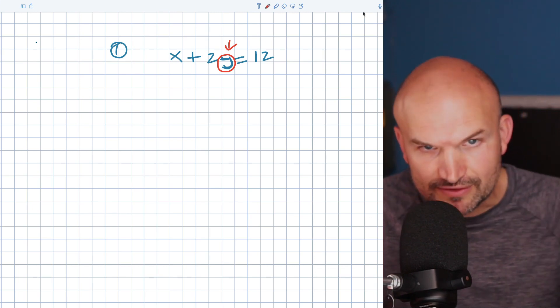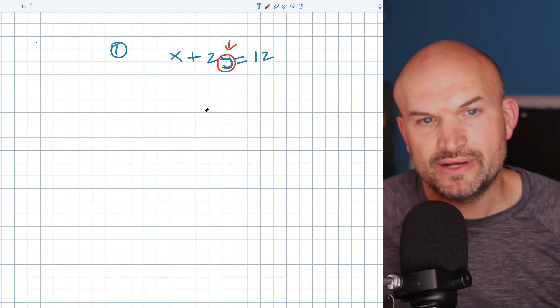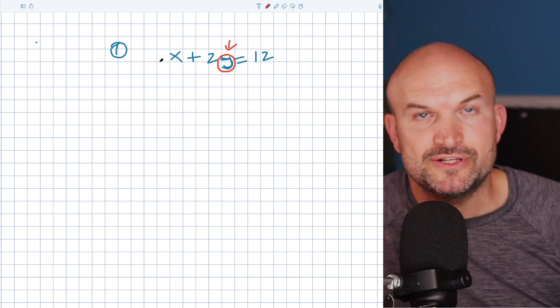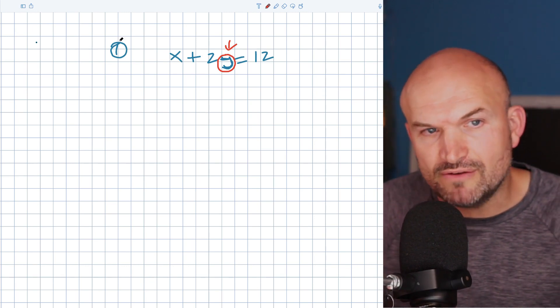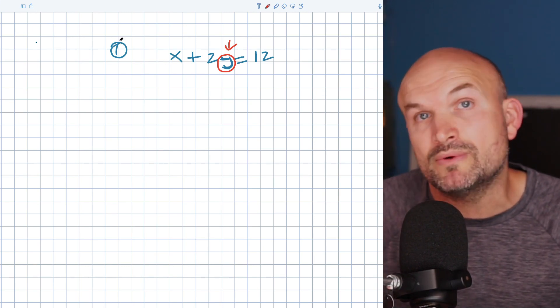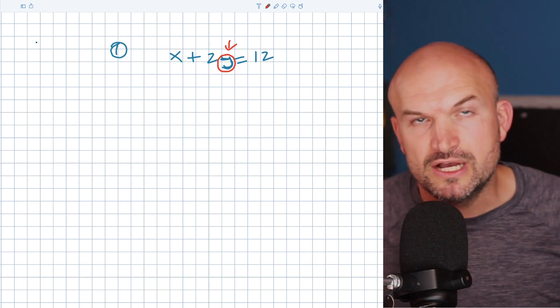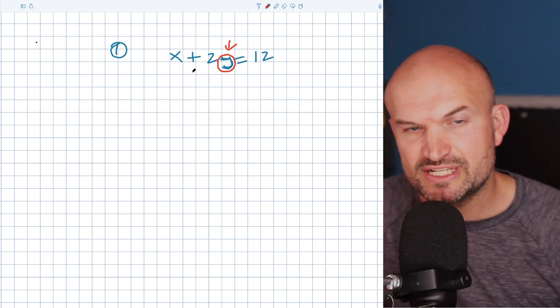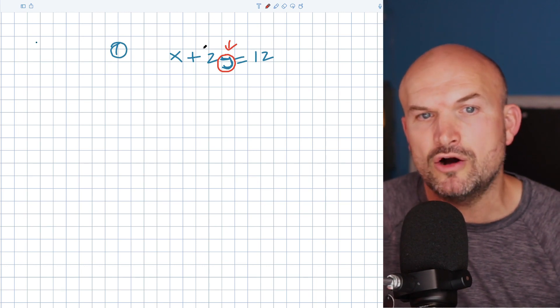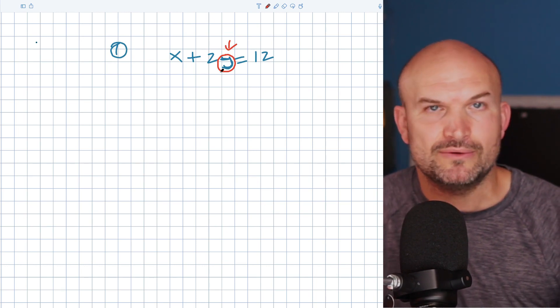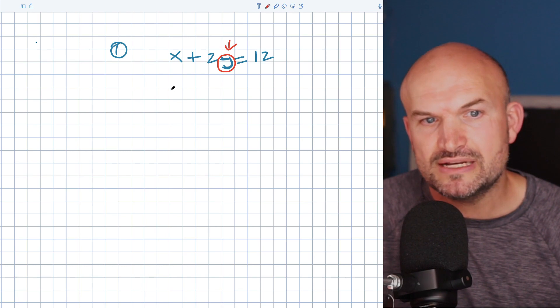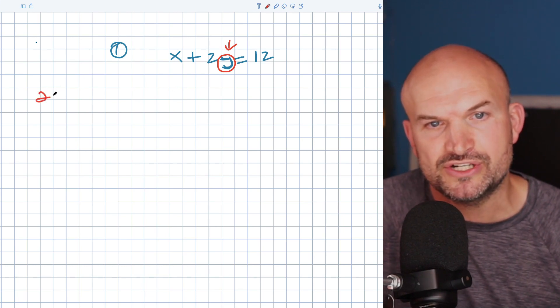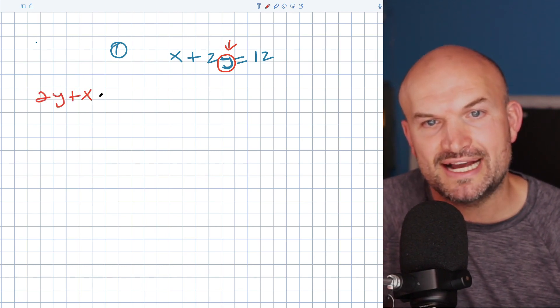Now, when we're solving for something, what is it we're doing? We're trying to undo what's happening to the variable. Now, remember from solving linear equations, we're undoing based on what we call our reverse order of operations. So we're going to want to undo addition and subtraction first. Now, sometimes students get confused in a problem like this because they see oh, it's plus two. So that means we're adding a two, but we're actually not adding a two.